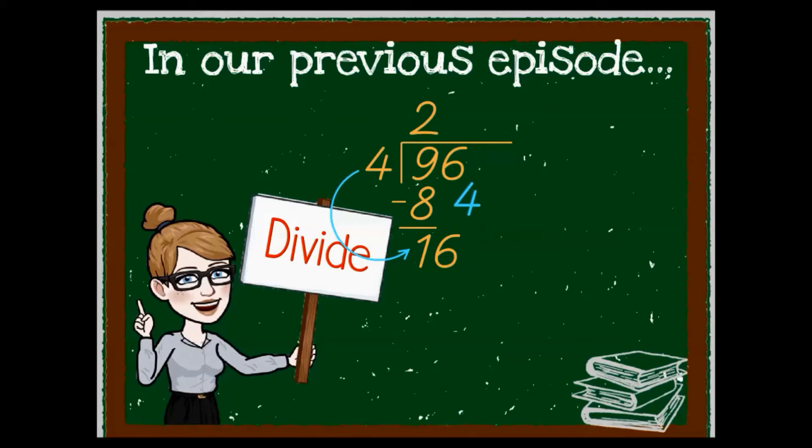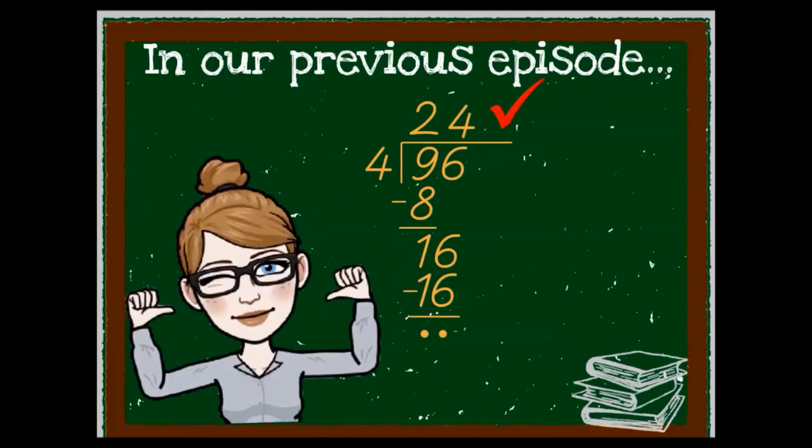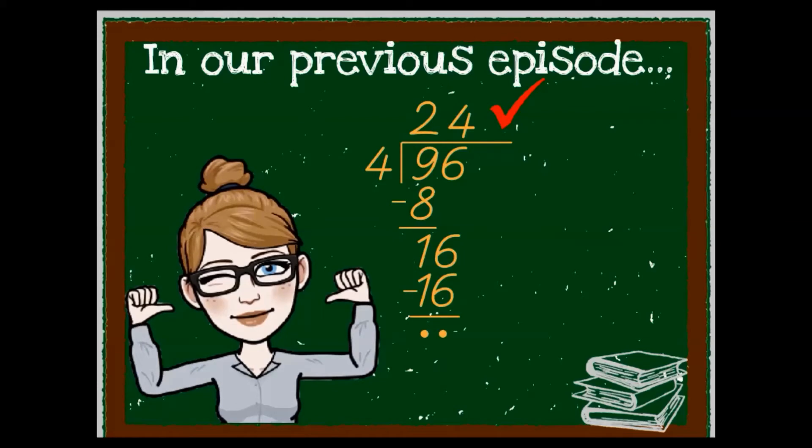Divide and move it upstairs. Multiply from the roof to the door and from the door to the floor. Subtract and there you go. Instant success because we have no more numbers to bring down. We are done.